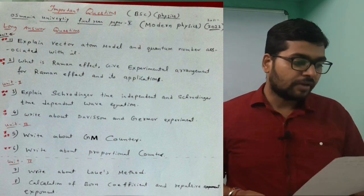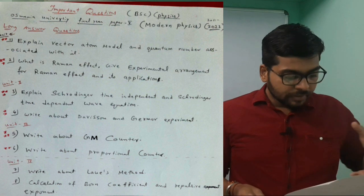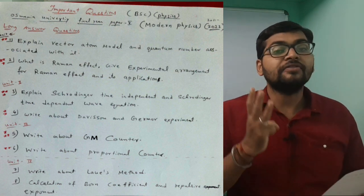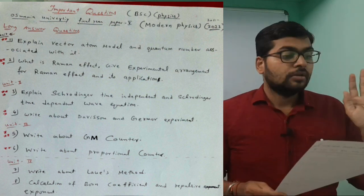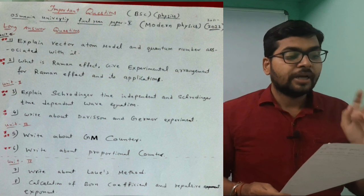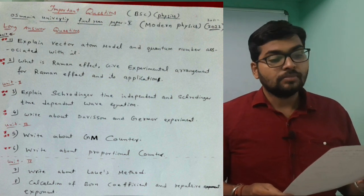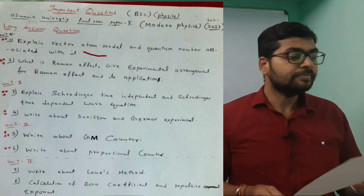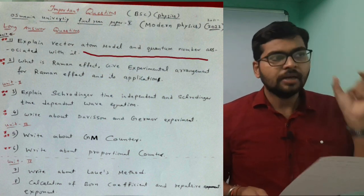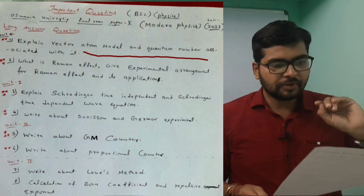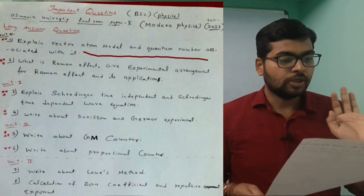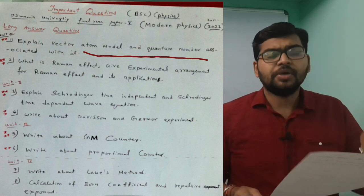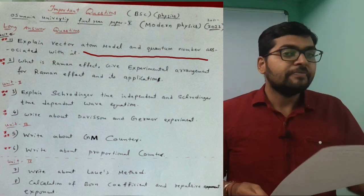Let's discuss long answer questions. I've given them in such a way that three-star means very very much important, two-star is also important. First question: Explain vector atom model and quantum number associated with it. Various quantum numbers - just explanation part, no diagram. It is very much easy if you study three or four times.